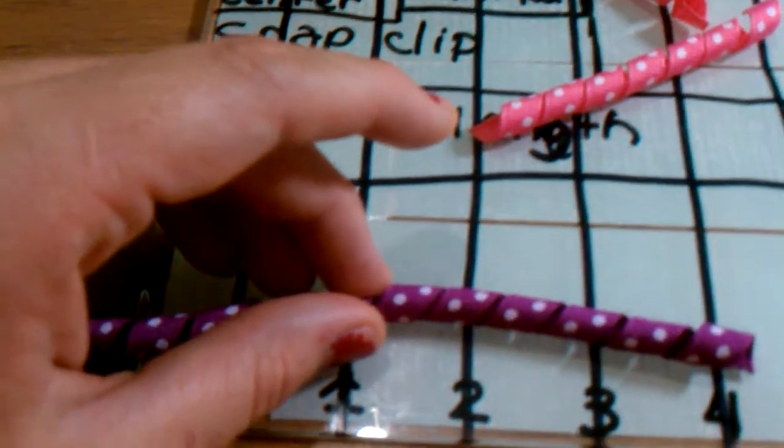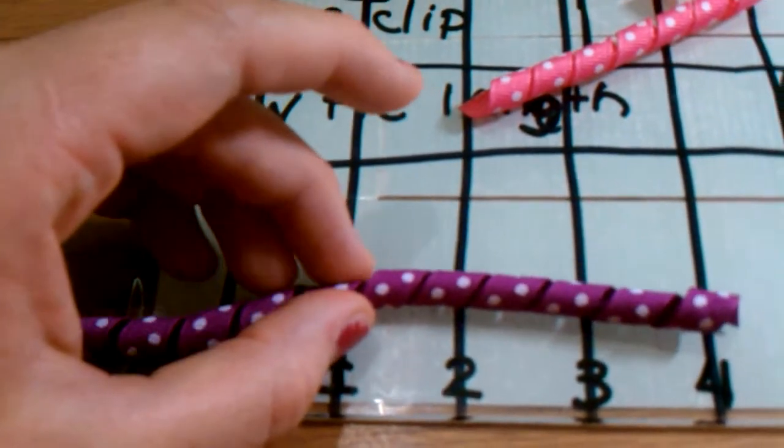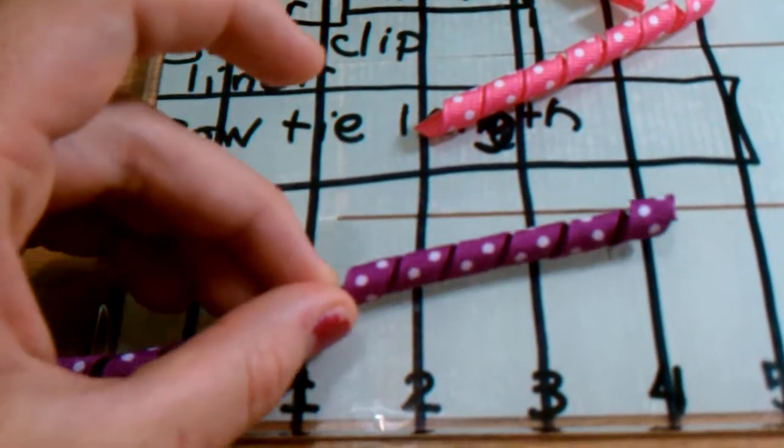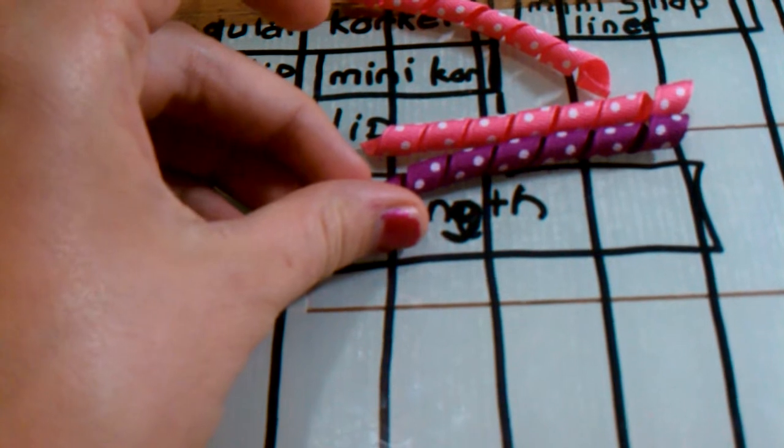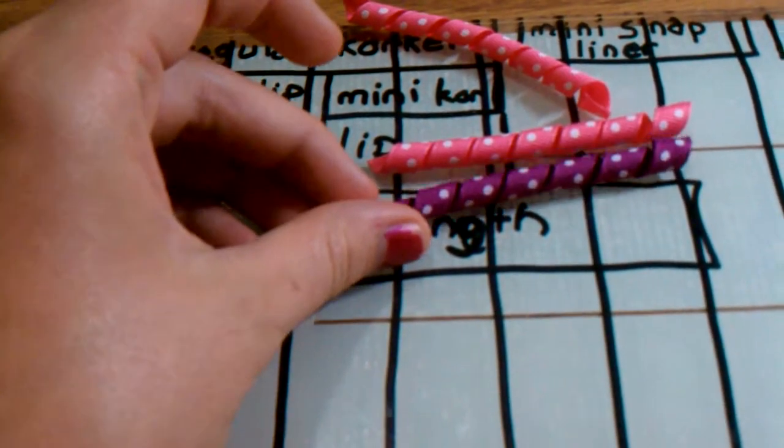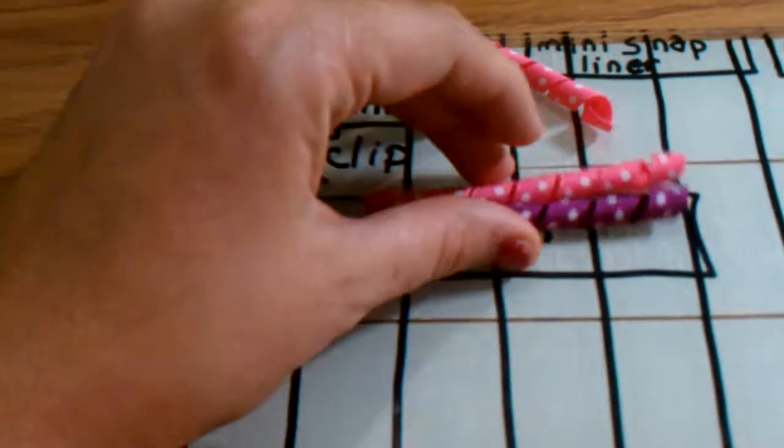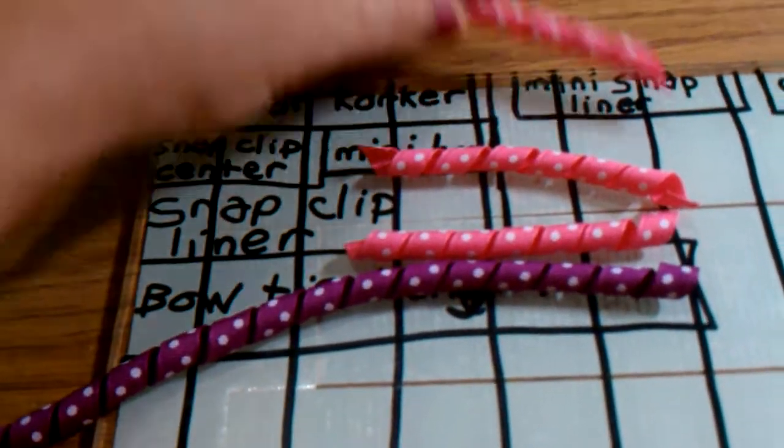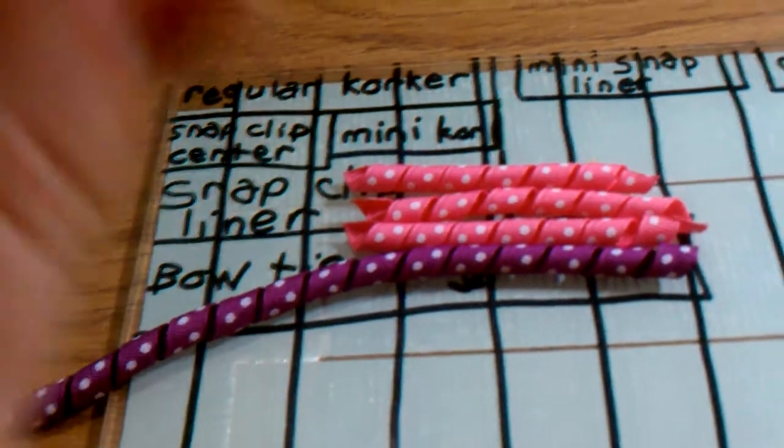So even though there are six curls in this strand and seven curls in this strand, it is still going to be the same length and therefore it is still going to make a nice corker. You just have to check each new strand of corker that you pull out.